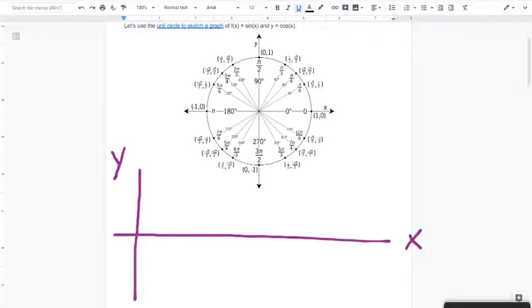Okay, so anytime you graph, you want a pair of axes. So I've got an x-axis and a y-axis. And we are going to be graphing y equals the sine of x, which is the same thing as f of x equals the sine of x.